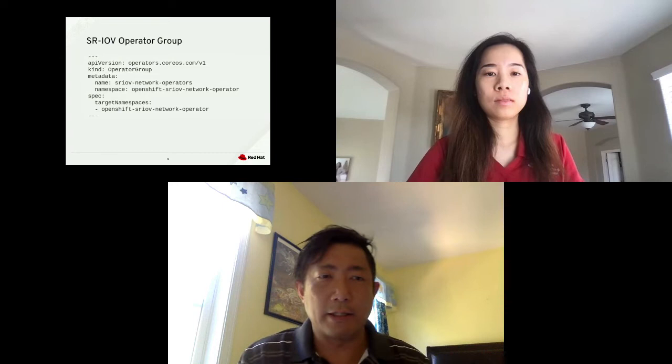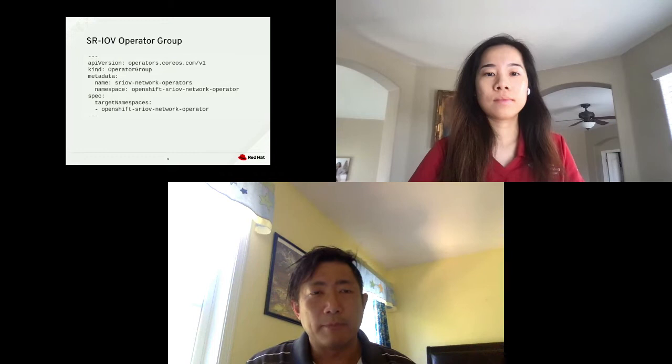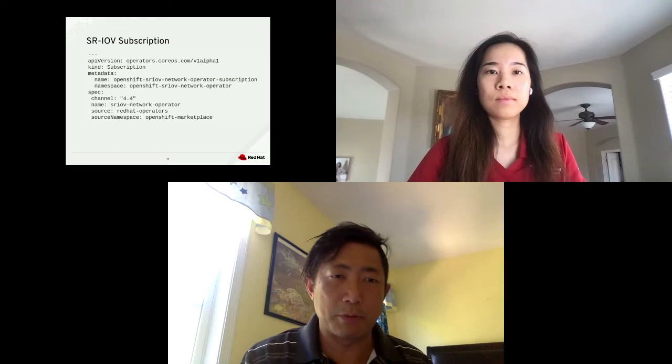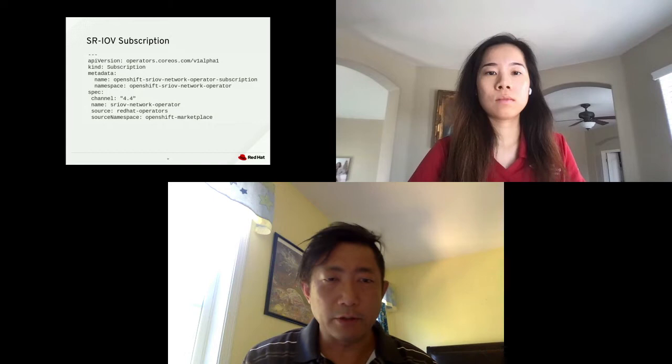The SRIOV operator group is the second object. The kind of the CRD is OperatorGroup. You need to set up the target namespace, which points to the OpenShift SRIOV network operator namespace you created in the last step. The subscription object is the CRD with kind Subscription. You give it a name — SRIOV network operator will be the name. The source will be Red Hat operator. For the source namespace, you specify OpenShift marketplace as the source. You also specify the version to be 4.4 for the channel. Then you apply OC apply -f to create this object.